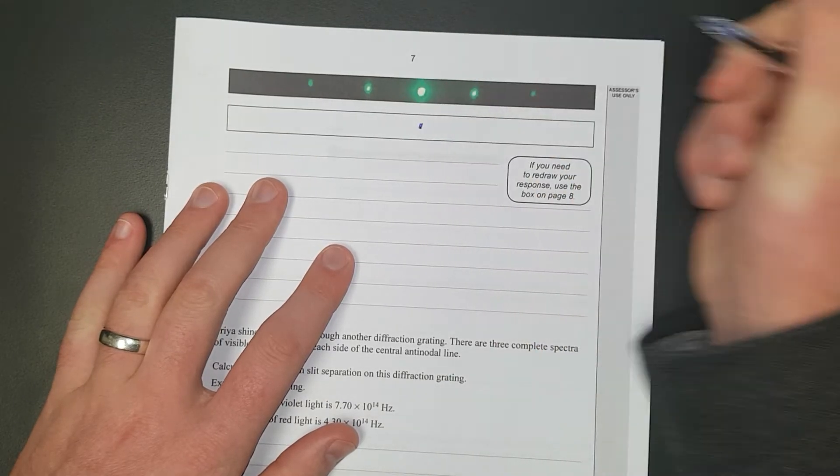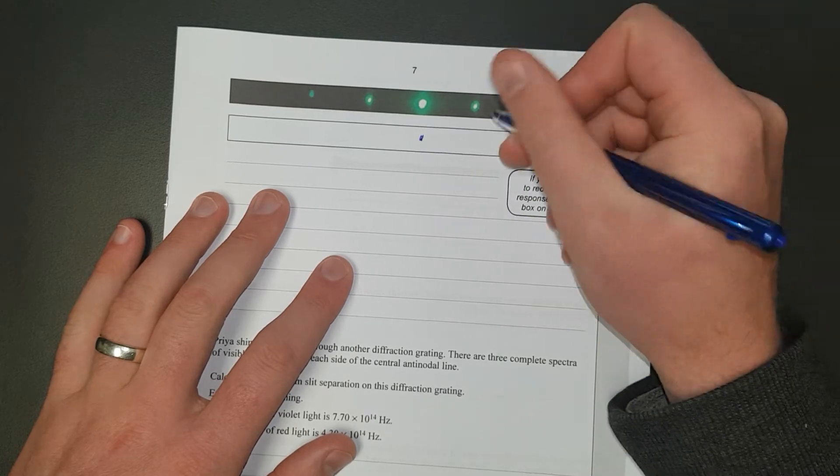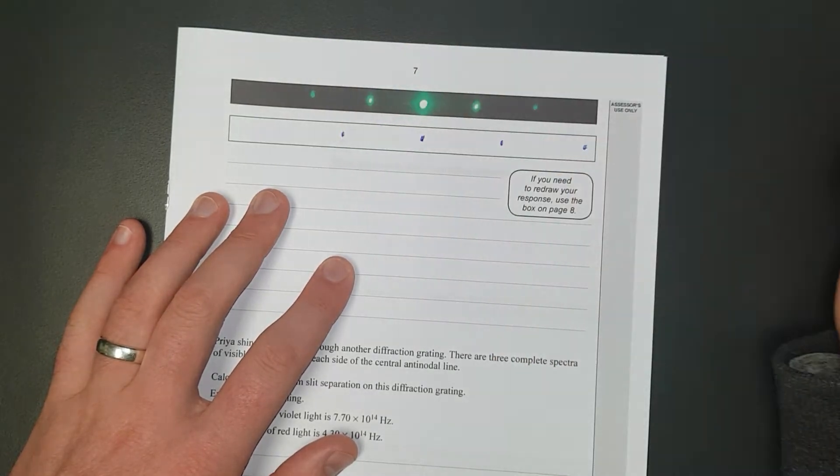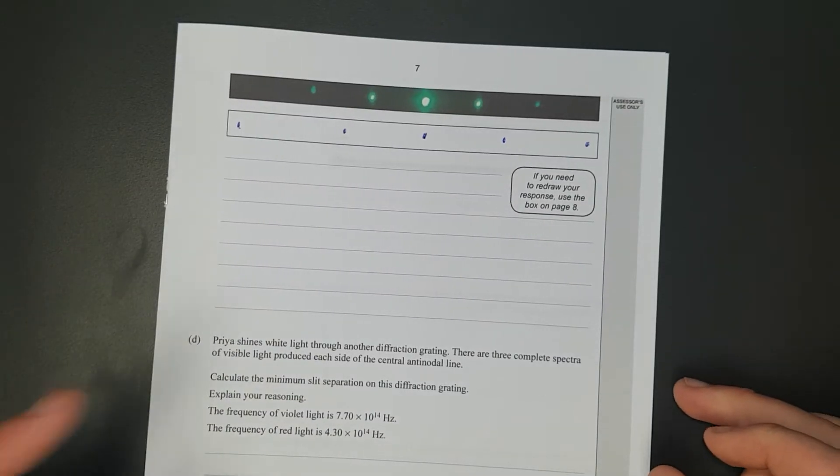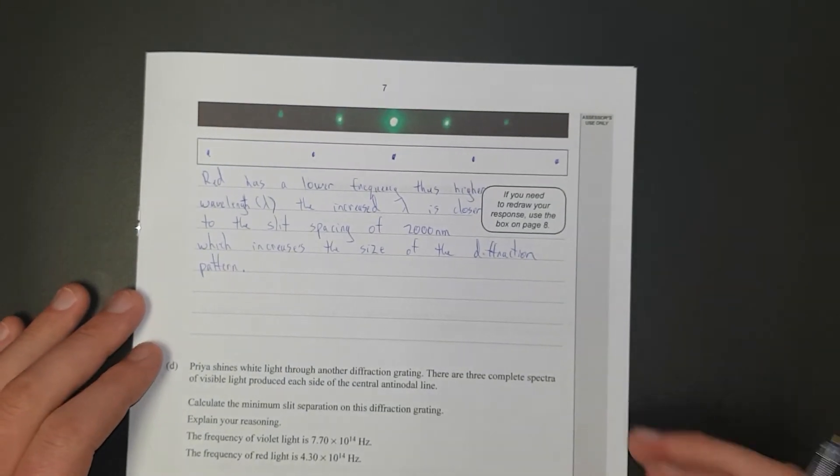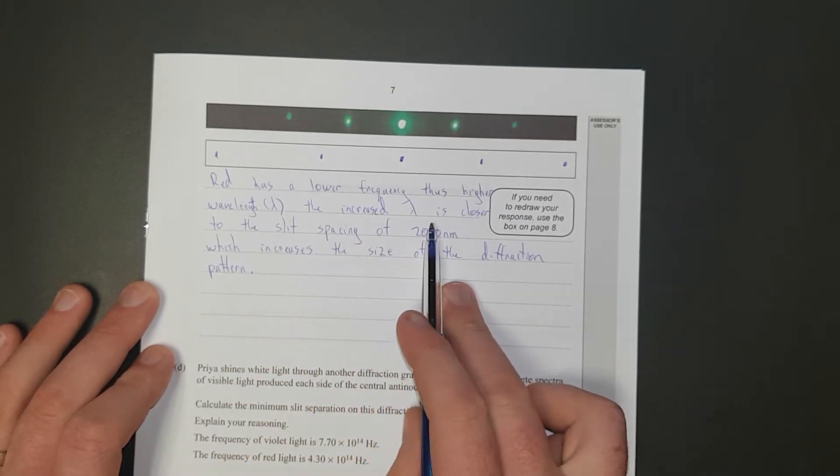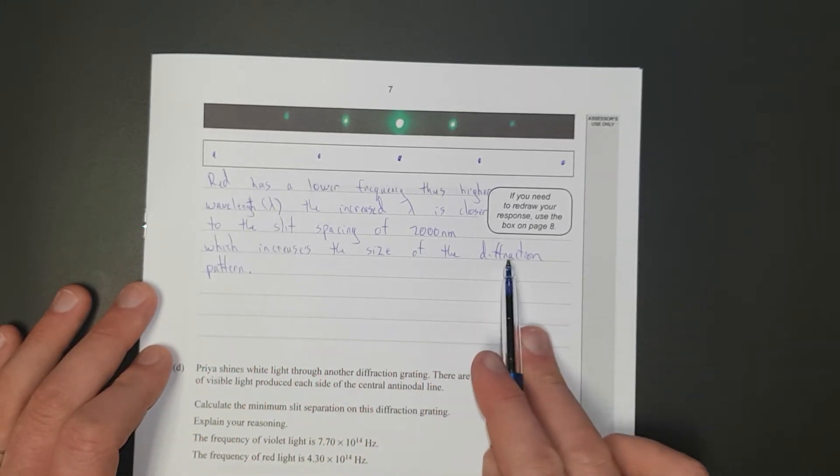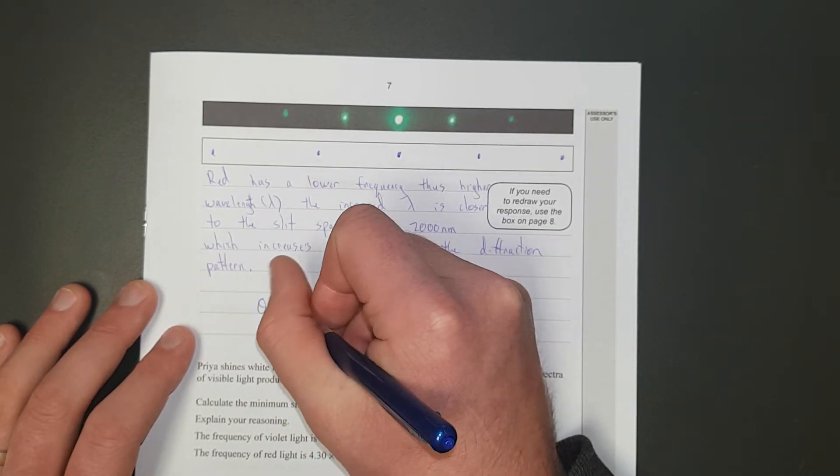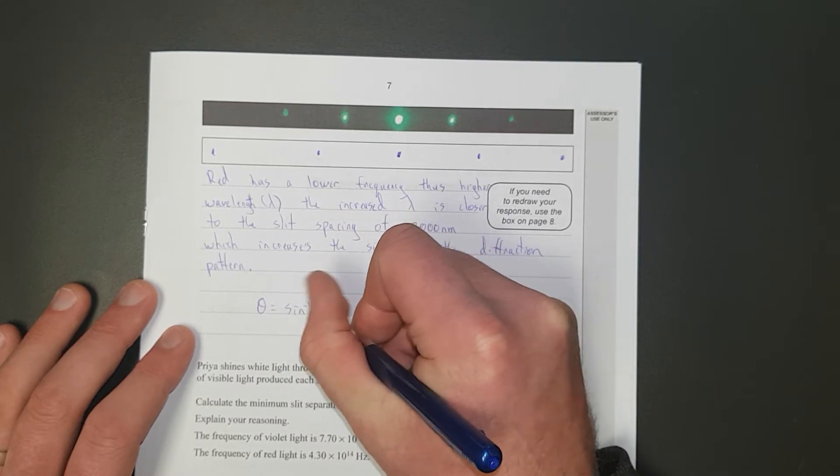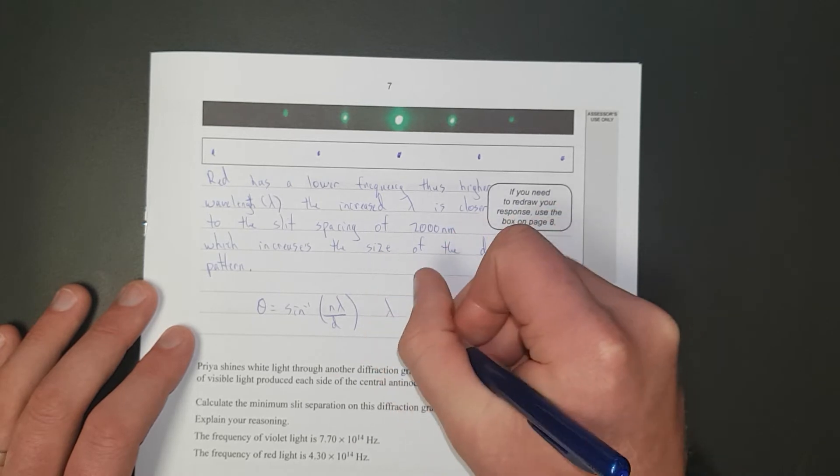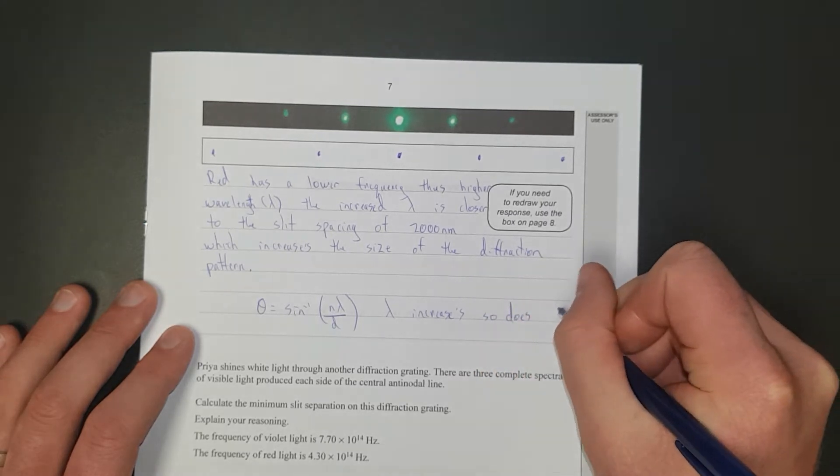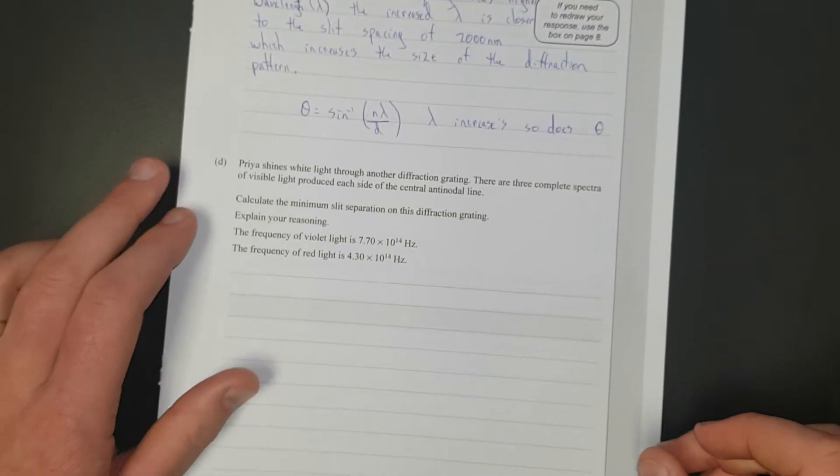Here's our first dot, you'll still have a dot in the middle. The second dot is going to be further apart, and the third dot even further. Symmetrically we keep it the same because it is a symmetrical system. So I've said red has a lower frequency, thus higher wavelength. The increased wavelength is closer to the slit spacing of 2,000 nanometers, which increases the size of the diffraction pattern. You can also put the formula: theta equals sine inverse N lambda divided by the distance. As lambda increases, so does theta. That's a mathematical way to show it.